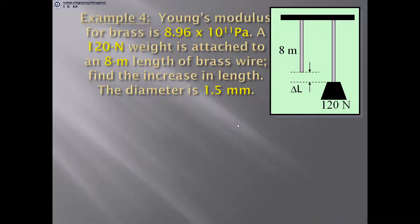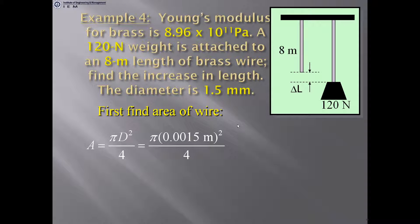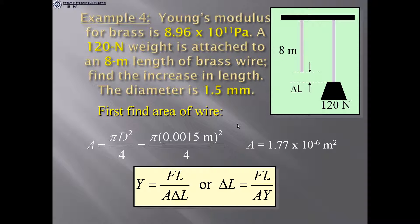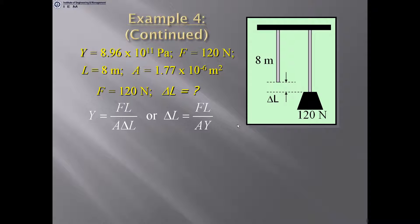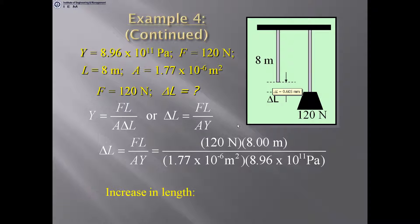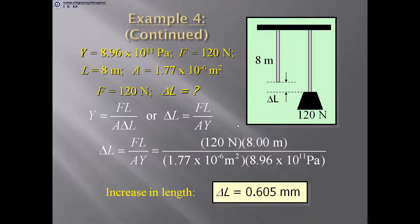Example: Young's modulus for brass is 8.9 × 10¹¹ Pascal. A 120 Newton weight is attached to an 8 mm length of brass wire with a diameter of 1.5 mm. Find the increase in length. Area A = πd²/4 = 1.77 × 10⁻⁶ m². Using ΔL = FL / (A · Y), substituting all values gives ΔL = 0.605 mm.